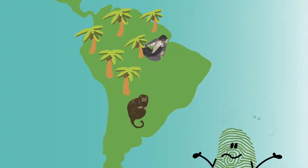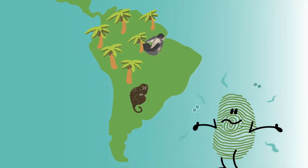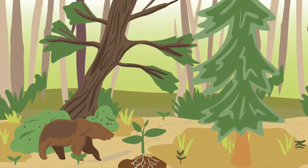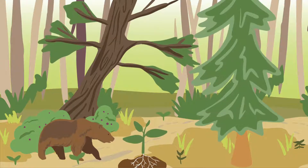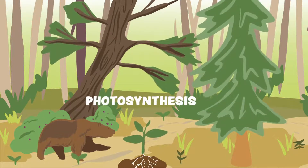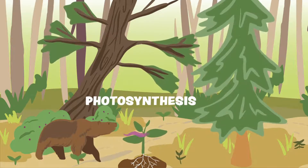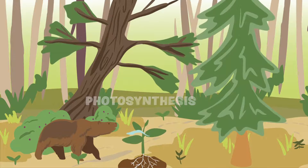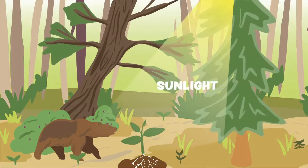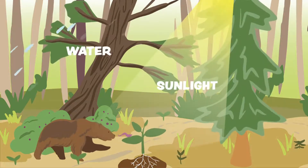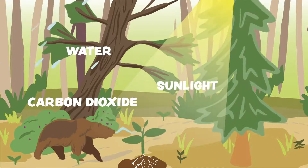But how do plants produce oxygen? Plants produce oxygen when they make food for themselves through a process called photosynthesis. Plants use three things to make food: sunlight, water, and carbon dioxide from the air.